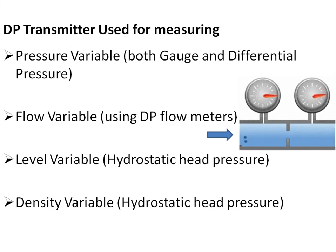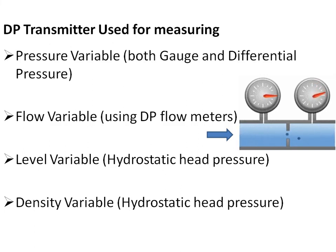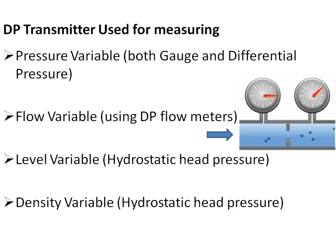A DP transmitter can be used for measuring many different process variables. One basic variable is the pressure variable — both gauge and differential pressures can be measured. Another important variable is the flow variable, which can be measured using differential pressure flow meters.